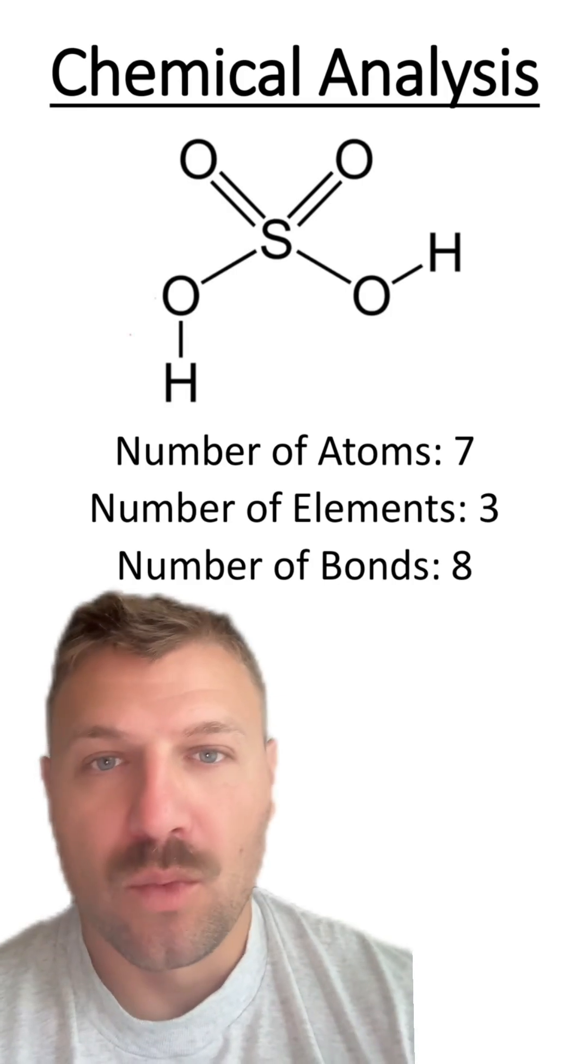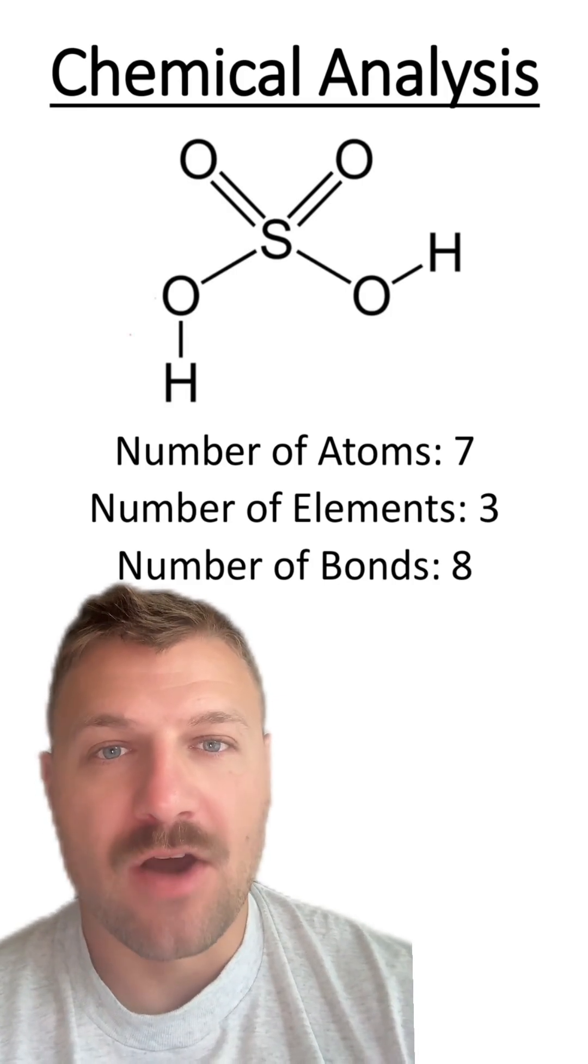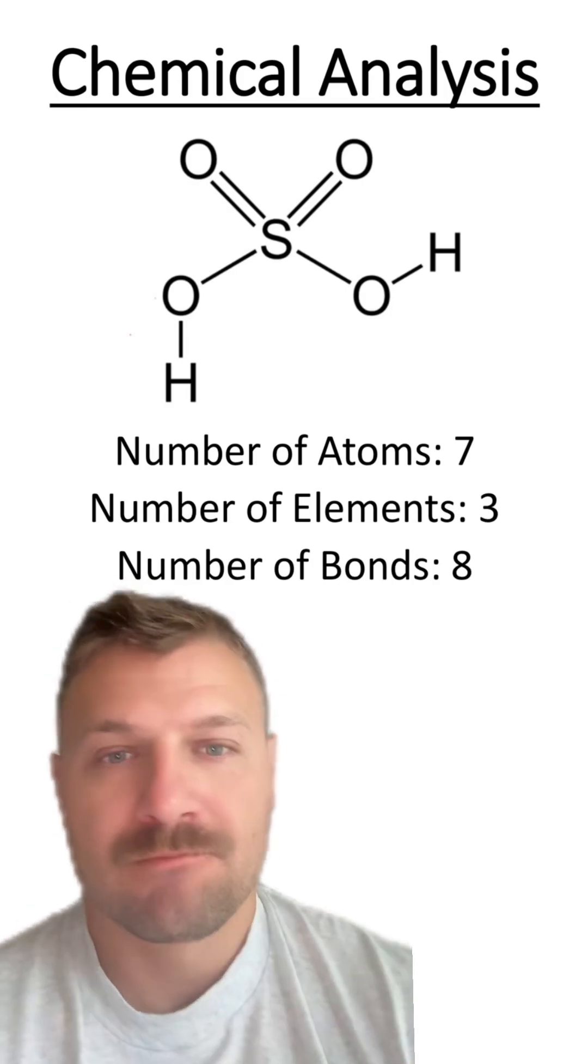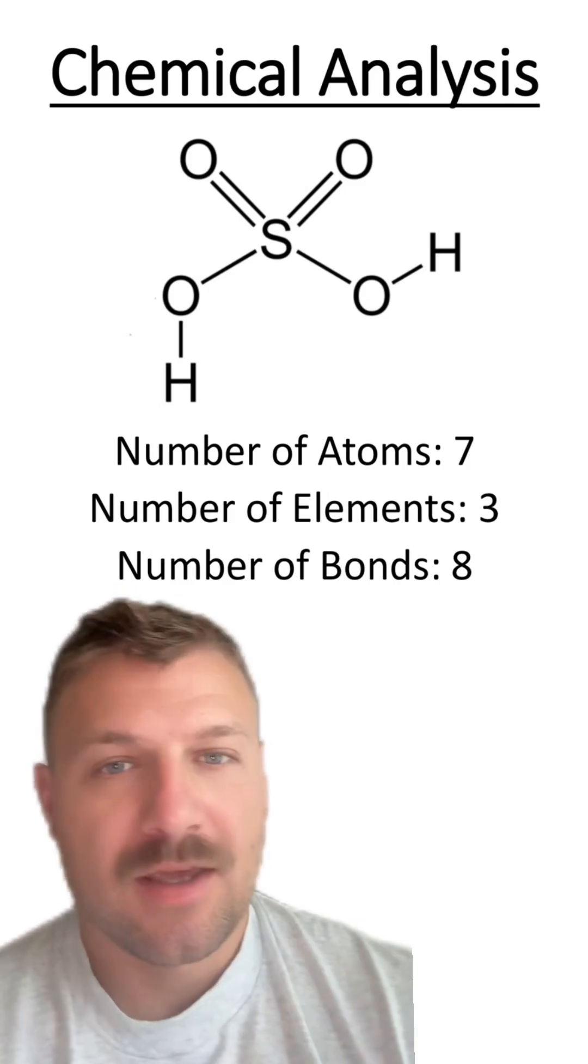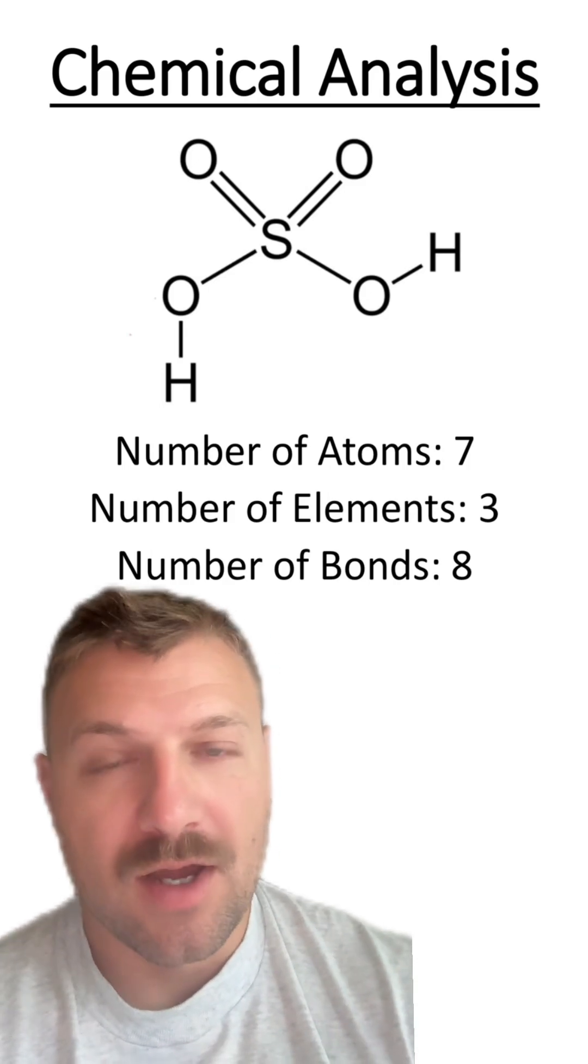There are seven atoms, one atom of sulfur, four atoms of oxygen, and two atoms of hydrogen, which means there's three different elements, and there are eight different chemical bonds.